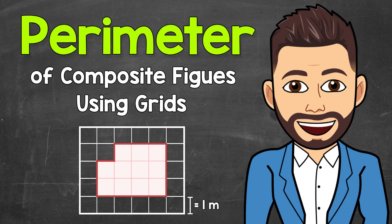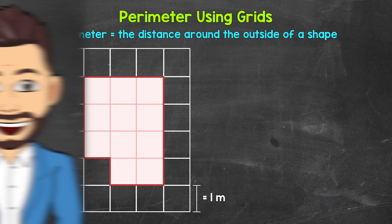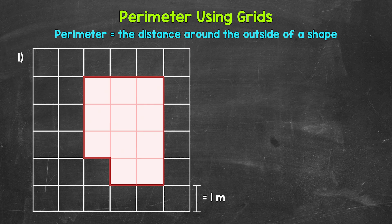Welcome to Math with Mr. J. In this video, I'm going to cover how to find the perimeter of a composite figure, a composite shape, using a grid. In our previous perimeter videos, we used grids and unit squares to count the units around the outside of a shape. Now we're going to take this a step further — even though we're still using grids, we're not going to count each individual unit, because eventually we're going to find perimeter without using grids.